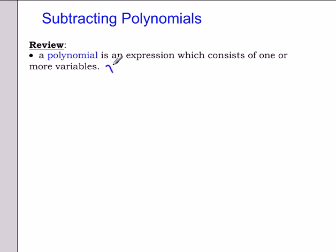If you remember, a variable is any letter - it could be x, y, z - any variable that stands for an unknown number. A polynomial can look something like 5x plus 3. You have an expression which consists of one variable.